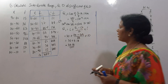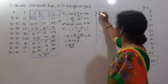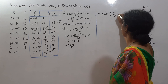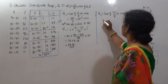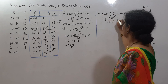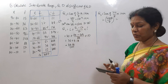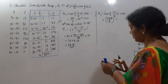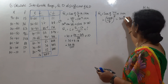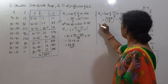This gives us Q1 = 38.18. Now for Q3, the first formula is: size of the 3N/4th item. So Q3 position = 3N/4 = 3 × 480/4 = 360. We need to find where the 360th item lies.